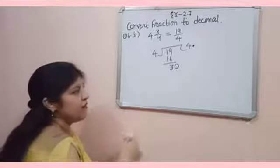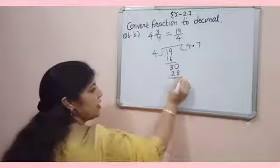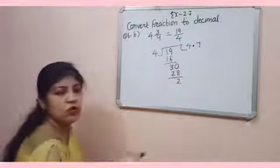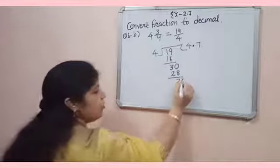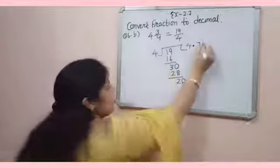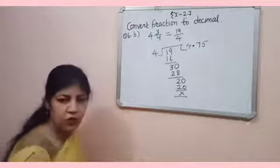Now, 30 will be divided by 4, 7 times, 28. Now, 30 minus 28, 2. Take one more 0. 20. And, now, 4, 5 times, that's 20. Now, remainder is 0.